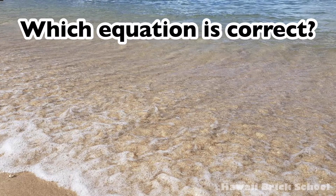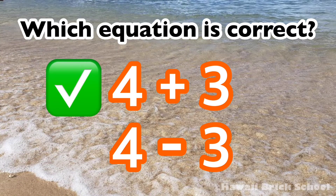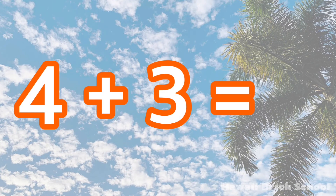Which equation is correct? Four plus three or four minus three? The correct equation is four plus three. Four plus three is seven.